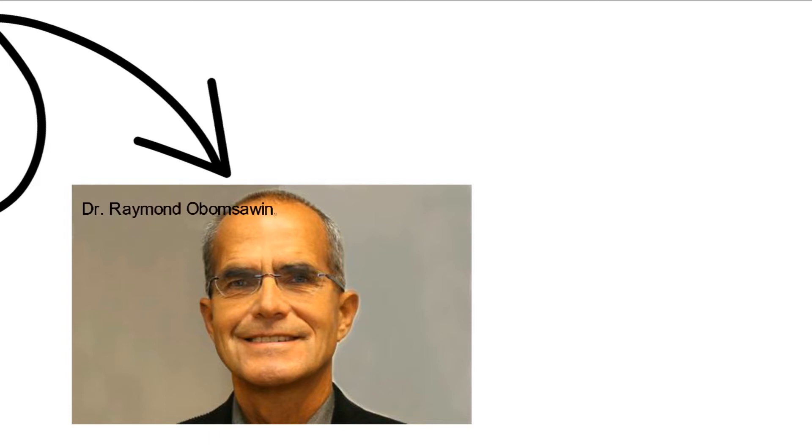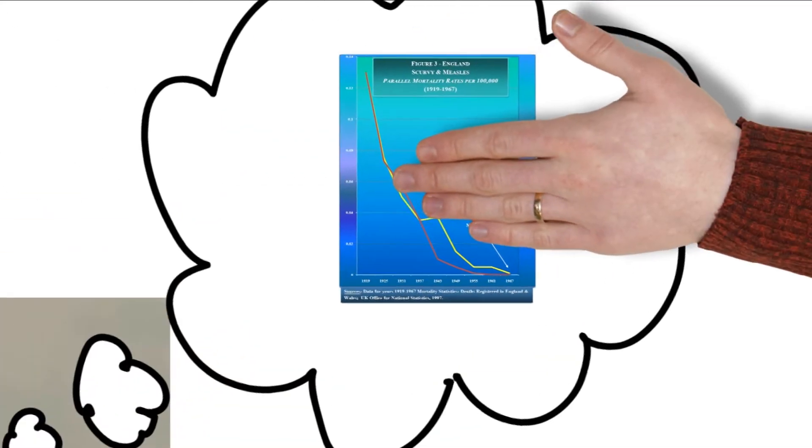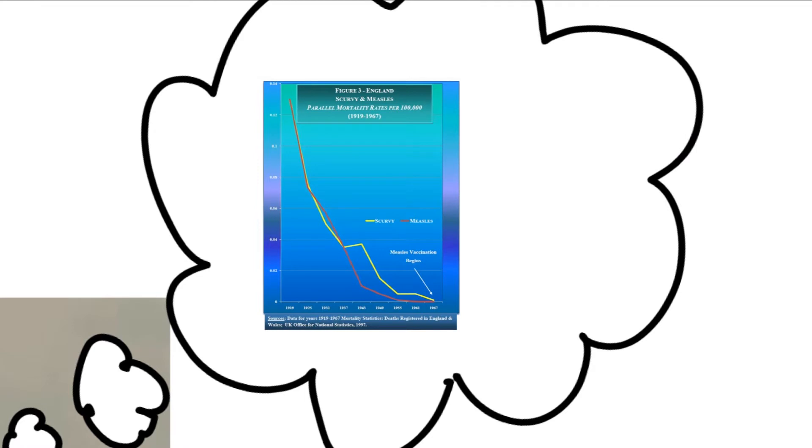We decided on a graph prepared by Dr. Obun-Sawin in 2009. It shows most markedly the dramatic decline of measles and scurvy in the UK at the start of the 20th century.